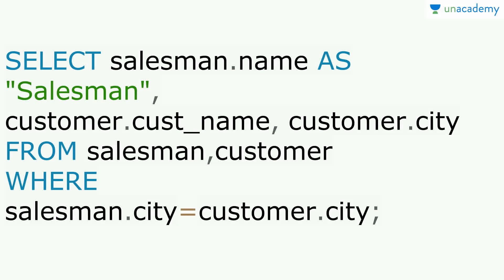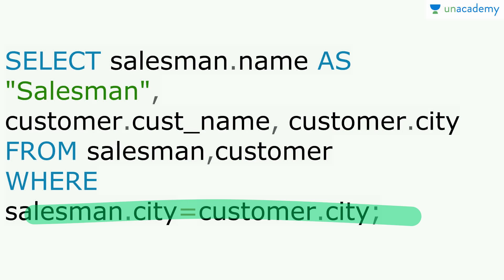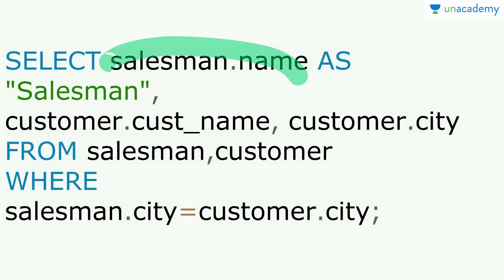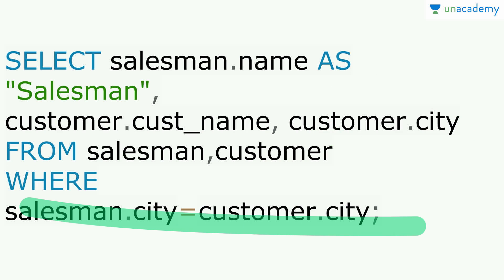So here: SELECT salesman name, customer name, customer city FROM both tables WHERE salesman city is equal to customer city. Apart from this method, we can also apply JOIN by: SELECT salesman.name, customer.customer_name, customer.city FROM salesman INNER JOIN customer ON salesman.salesman_ID = customer.customer_ID, with the condition WHERE salesman.city = customer.city.